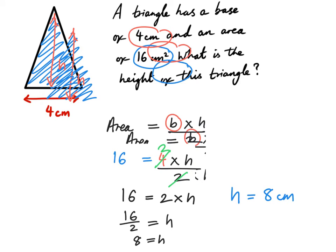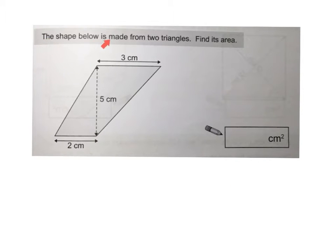How do I know that the unit is in centimetres? Well, all of the units that I have used here are in centimetres, so the height has to be in centimetres, because the area is in centimetres squared and the base is in centimetres. Now let's do this question. The shape below is made from two triangles — find its area. The shape is made up of two triangles and we have been asked to work out the total area.